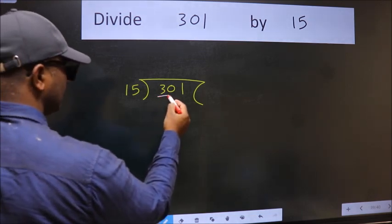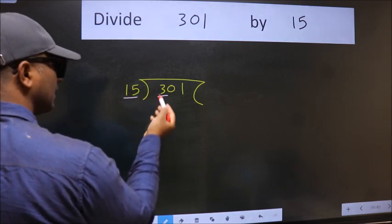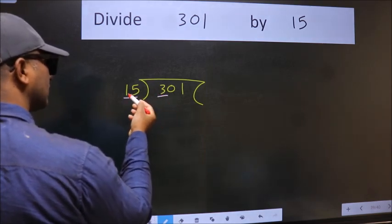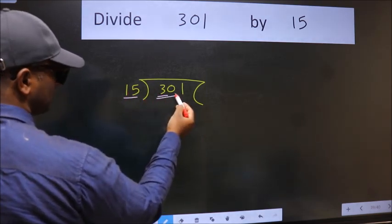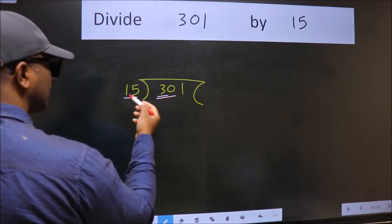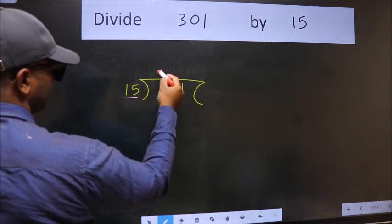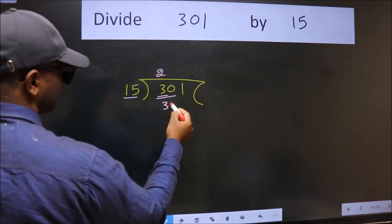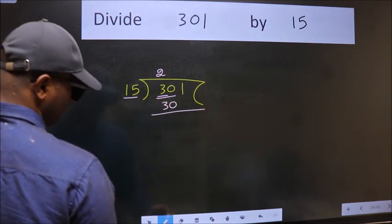Here we have 3. Here 15. 3 is smaller than 15, so we should take two numbers: 30. When do we get 30 in the 15 table? 15 times 2 is 30.